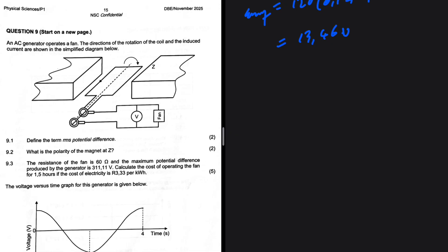Let's take a look at question 9.3. The resistance of the fan is 60 ohms and the maximum potential difference produced by the generator is 311.11 volts. Calculate the cost of operating the fan for 1.5 hours if the cost of electricity is 3.33 per kilowatt hour.